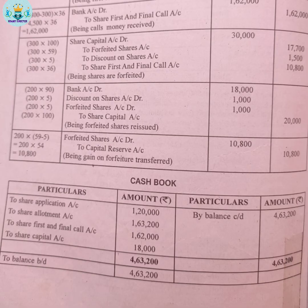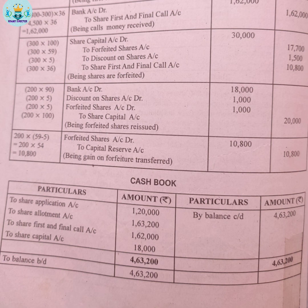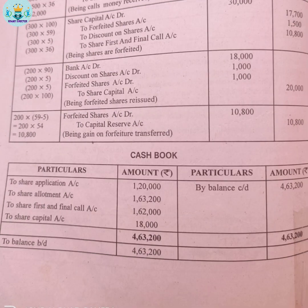Now for the cash book. The cash book records all bank receipts and payments. On the debit side: share application account Rs.1,20,000; share allotment account Rs.1,63,200; share first and final call Rs.1,62,000; and re-issue of shares. The total bank receipts can be balanced with a balance carried down. The cash book is straightforward — just pick up all the bank-side entries from the journal.